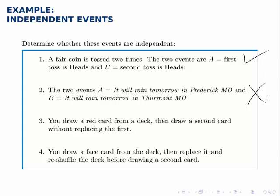Those two events have some impact on each other's probability. The third scenario says you draw a red card from the deck, meaning either a heart or a diamond, and then you draw a second card without replacing the first. Now if I drew a red card the first time, the deck looks different than it did before. Now there are 51 total cards and only 25 of them are red, 26 of them are not red. Which means the probabilities for the second draw have changed, meaning these events are not independent. Because I didn't replace the card, the deck looks different and so all the probabilities have changed.